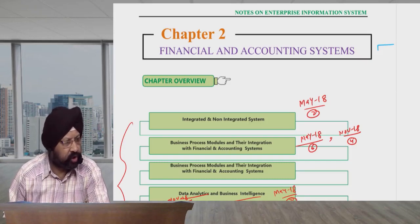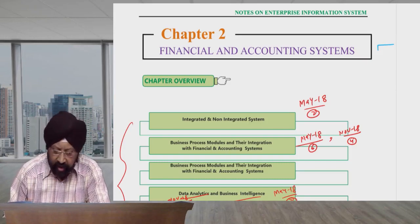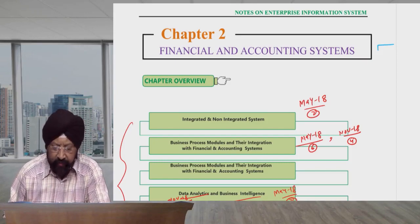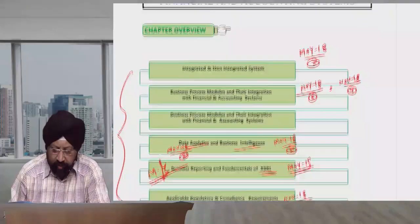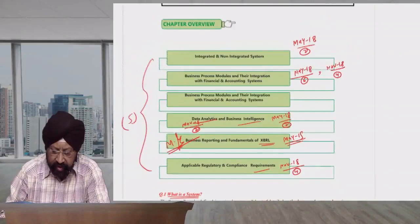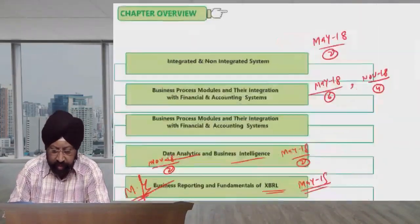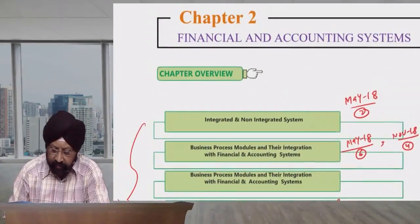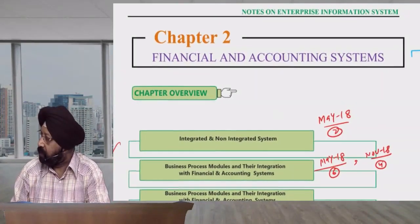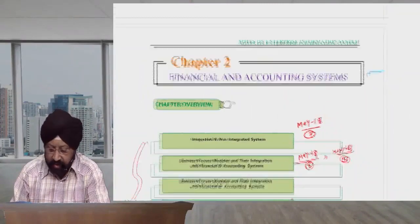Like in chapter 1, there were 6 components, 6 main things. In chapter 2, Financial and Accounting System, we will look at the chapter overview. How many things are we looking at? 5 things. Which 5 things are in it?